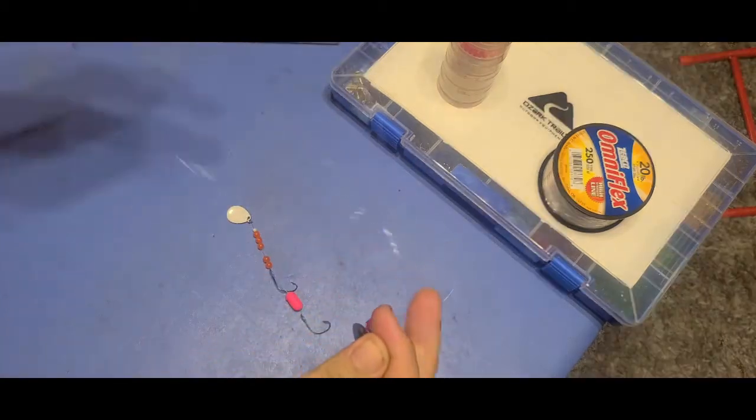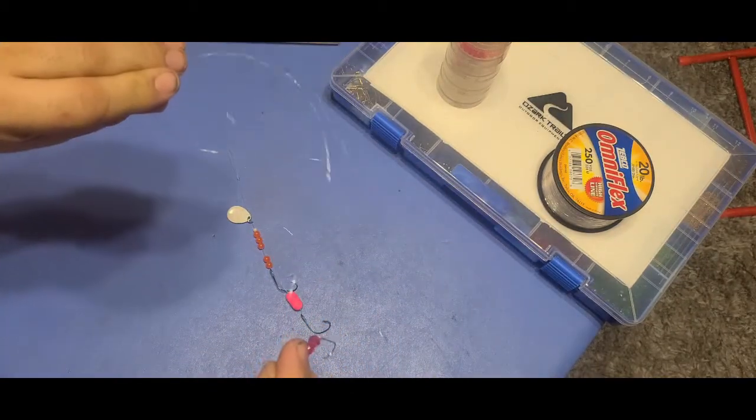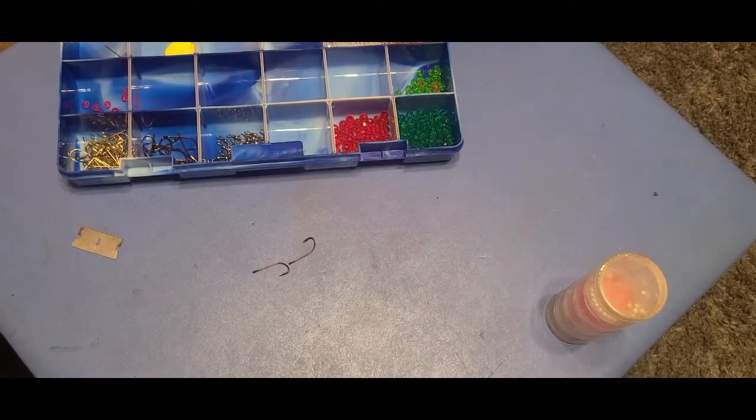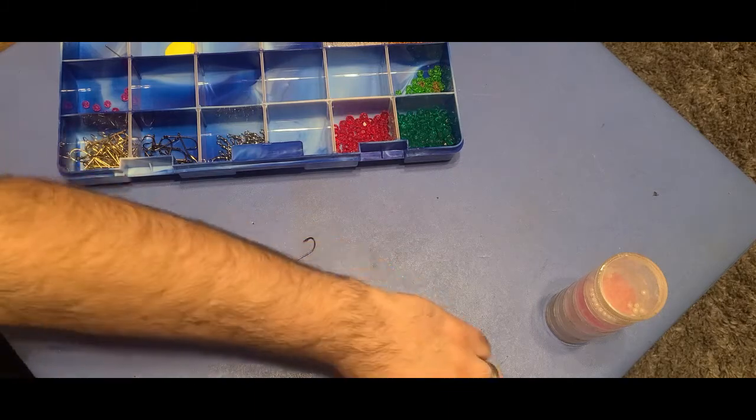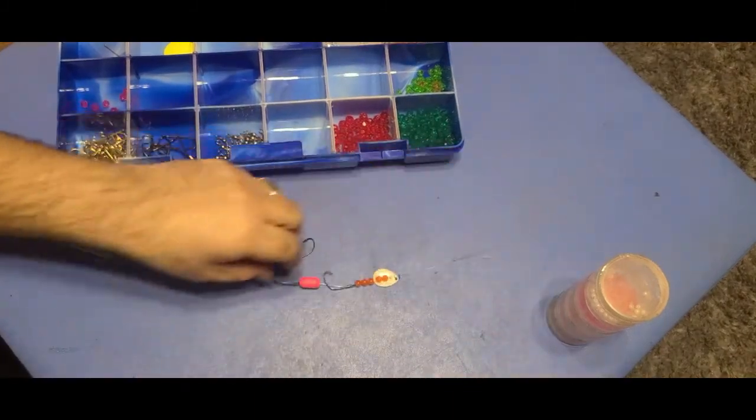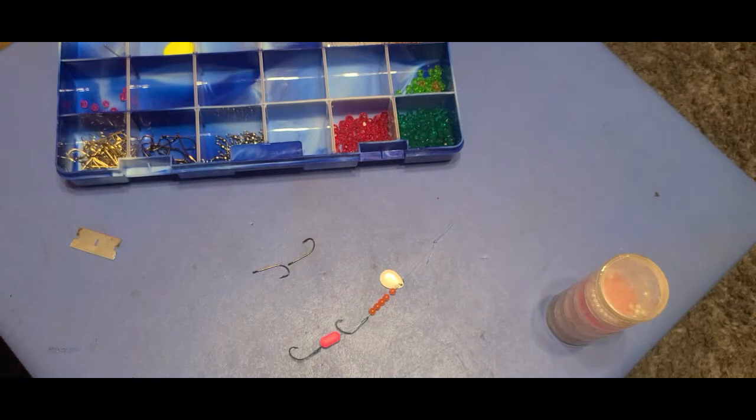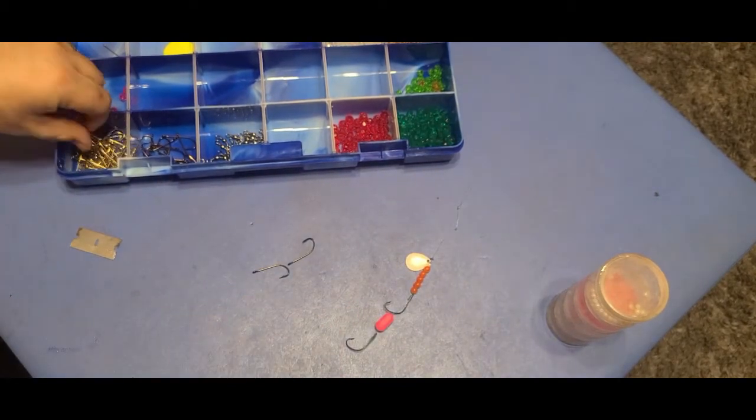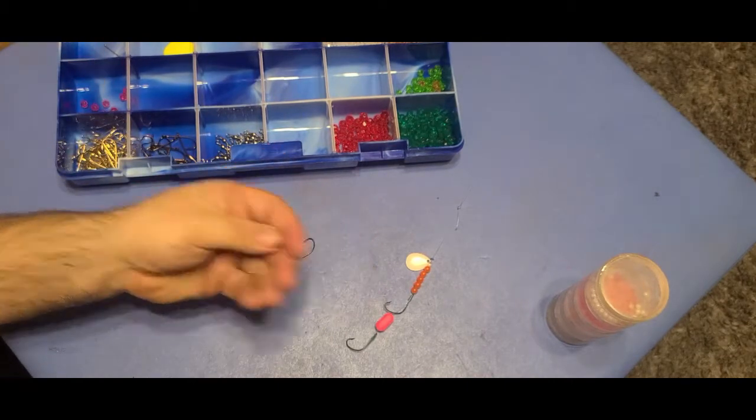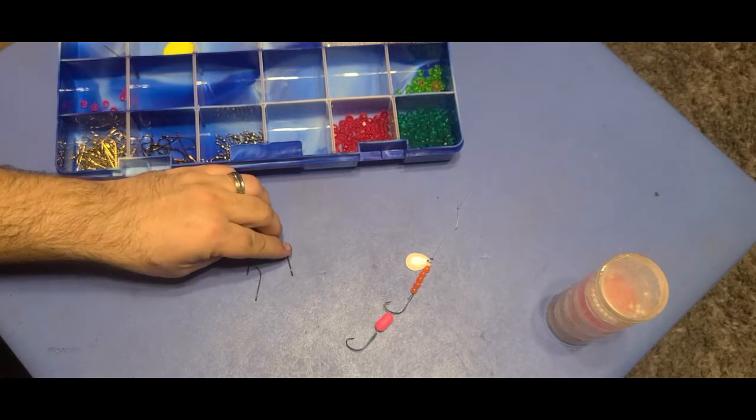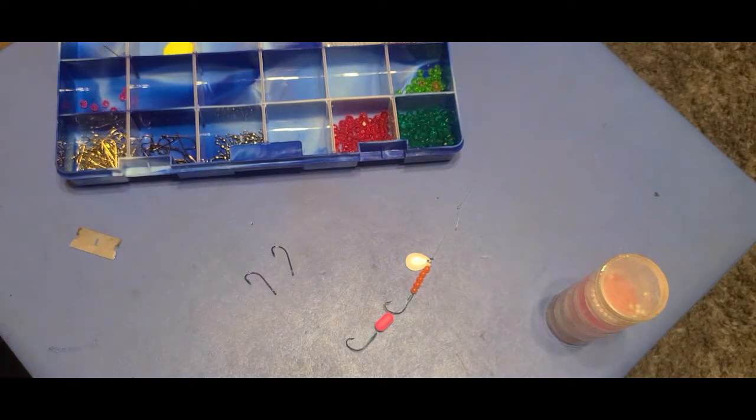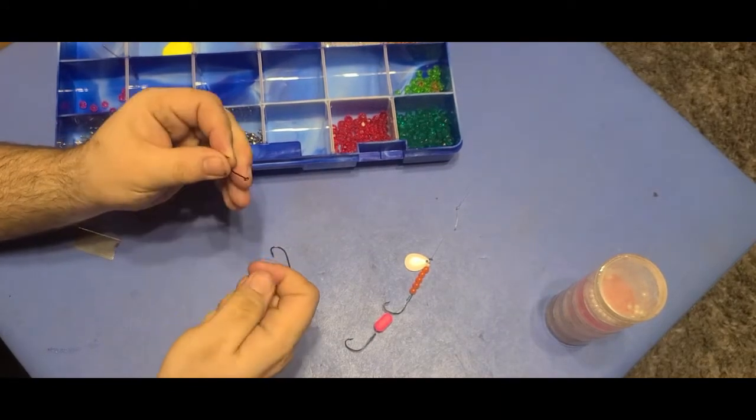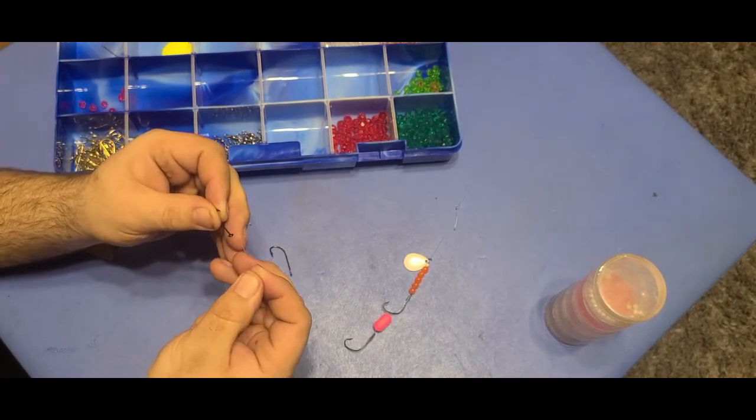Let's get started. To make these night crawler harnesses, the shorter ones I'm used to, I have these traditional gold colored Eagle Claw hooks. In this case I'm going to use these larger Eagle Claw razor hooks.